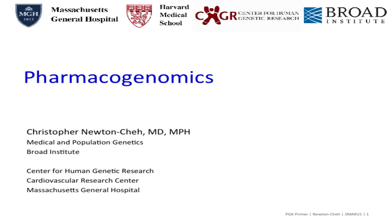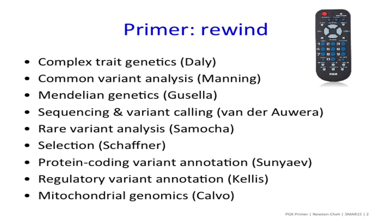Today's session is going to focus on pharmacogenomics. So far in the primary series, Mark Daly has covered complex trait genetics, Jim Gusella Mendelian genetics, Alyssa Manning common variant analysis, Geraldine van der Auwera sequencing and variant calling, Caitlin Samocha rare variant analysis, and then a series on annotating genetic variation. Steve Schaffner spoke about selection, Shamil Sinayev about protein coding variation, Manolis Kellis about non-coding variation, and Sarah Calvo talked about mitochondrial genomics. Upcoming talks include Bob Handsiger's talk on structural variation.